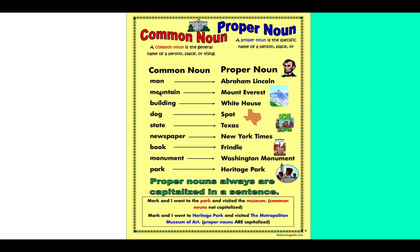Let's do a quick recap. A noun is a person, place, animal, or thing. A common noun is the general name of a person, place, or thing — like man, mountain, building, dog, state, newspaper, book, monument, and park. Notice how the first letter of these common nouns is not capitalized, because they're general names. But a proper noun is the specific name of a person, place, or thing — its given name — and proper nouns are always capitalized.